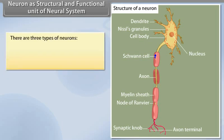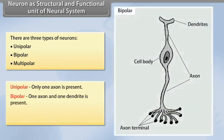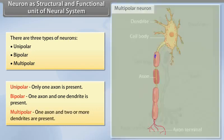There are three types of neurons: unipolar, bipolar, and multipolar. Unipolar has only one axon. Bipolar has one axon and one dendrite. Multipolar has one axon and two or more dendrites.